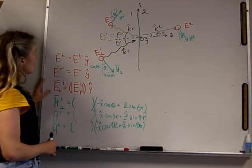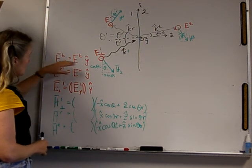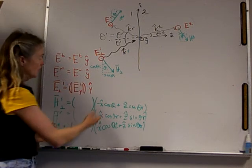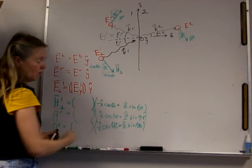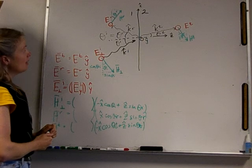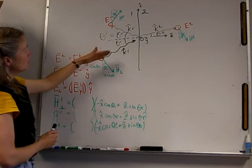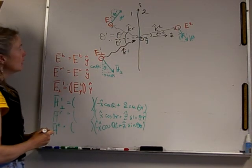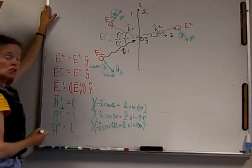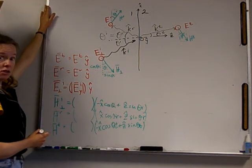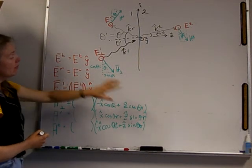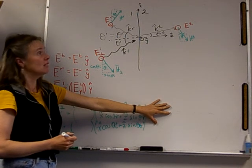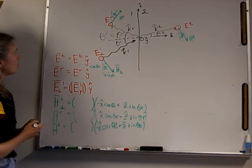In the last set of slides, we analyzed the polarization — the Y direction for the electric field and the XZ direction for the magnetic field. This time we're going to look at the direction of propagation for each of these fields. I'm going to write the direction of propagation up here as a vector, and then use it down here as a phase delay term for my magnetic and my electric fields.